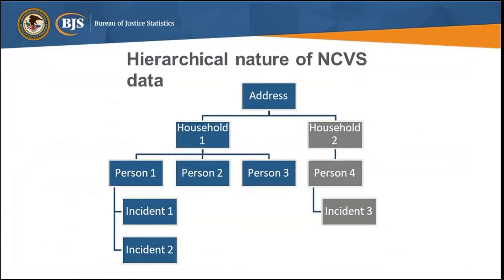This graphic shows and explains the hierarchical structure of the NCVS data and subsequent data files. First, you have an address and then a household living within that address. For example, the Morgan family lives at this address with three people in the household age 12 or older. The first person reported two incidents within the last six-month reference period, while the other two people didn't report any incidents. Then if the Morgan family moved and the Smith family moved into that address, they would become the new household and be interviewed for the NCVS because that address was still in the sample. They have one person age 12 or older and reported one incident in the past six months.